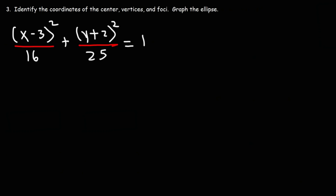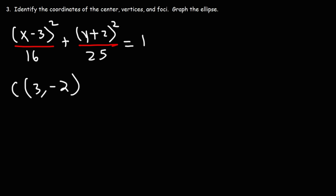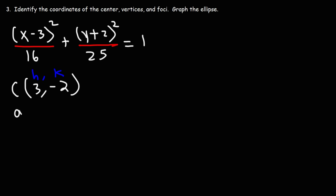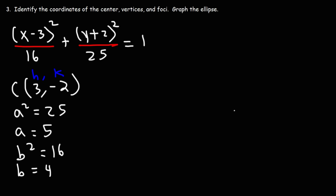Problem 3: identify the coordinates of the center, vertices, and foci, then graph the ellipse. The center is h comma k — here we have x minus 3, so h equals 3. We have y plus 2, so k equals negative 2. The center is at 3 comma negative 2. For a and b: 25 is larger than 16, so a squared is 25 and a equals 5. b squared is 16, so b equals 4.